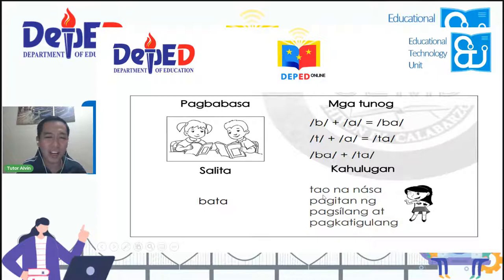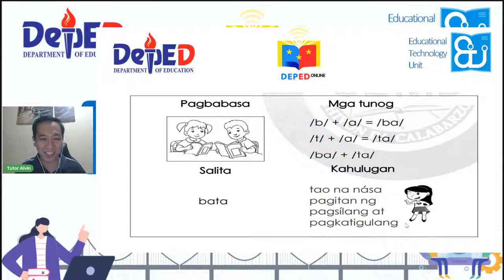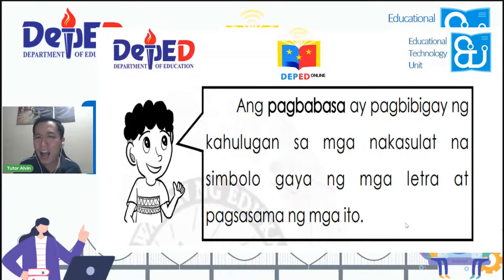Bata. Ano nga ba ang kahulugan nito? Tao na nasa pagitan ng pagsilang at pagkatandaan. Kayong mga nasa unang baitang ay tinatawag nating mga Bata. Ang pagbabasa ay nagbibigay ng kahulugan sa mga nakasulat na simbolo gaya ng mga letra at pagsasama ng mga ito. Pag tayo ay nagbabasa, ang isang salita ay binubuo ng mga letra o ng mga titik.